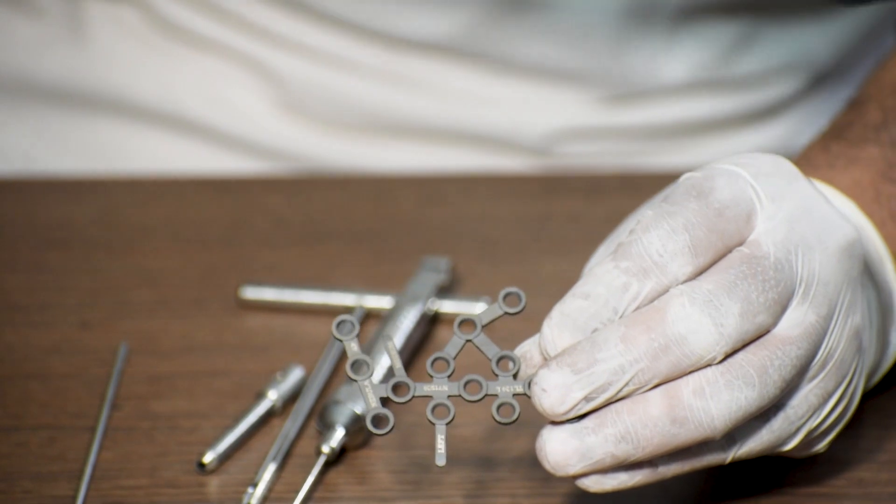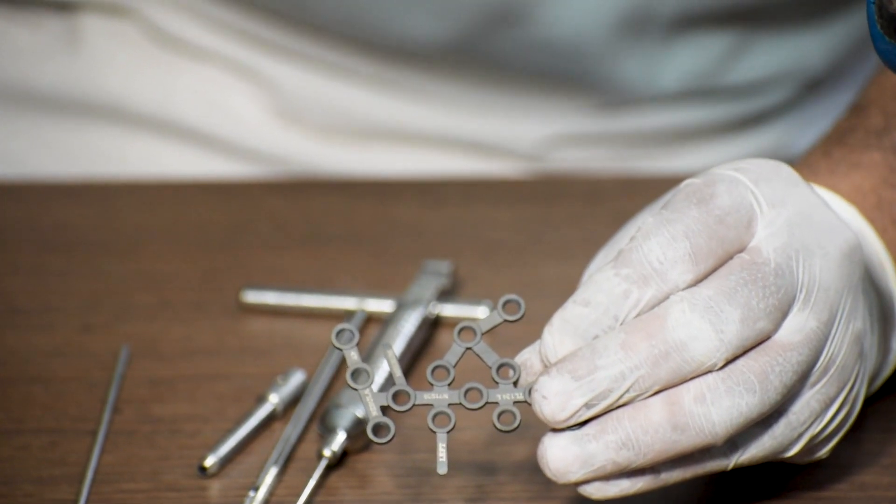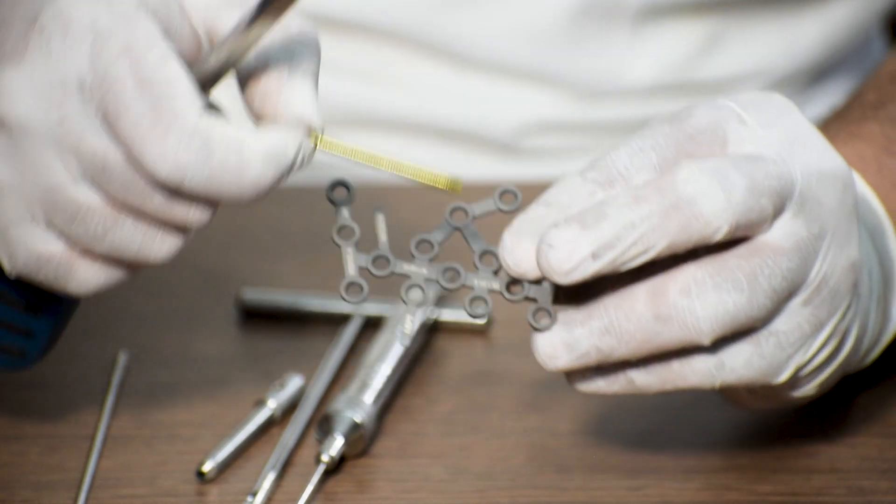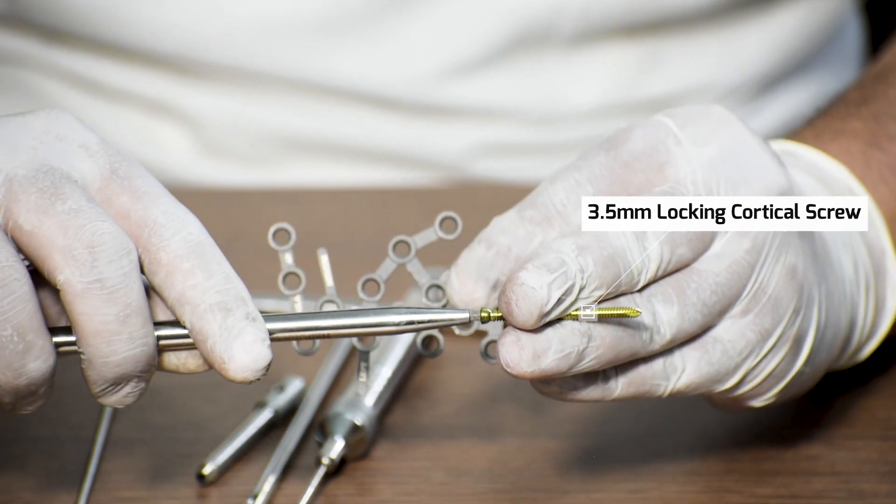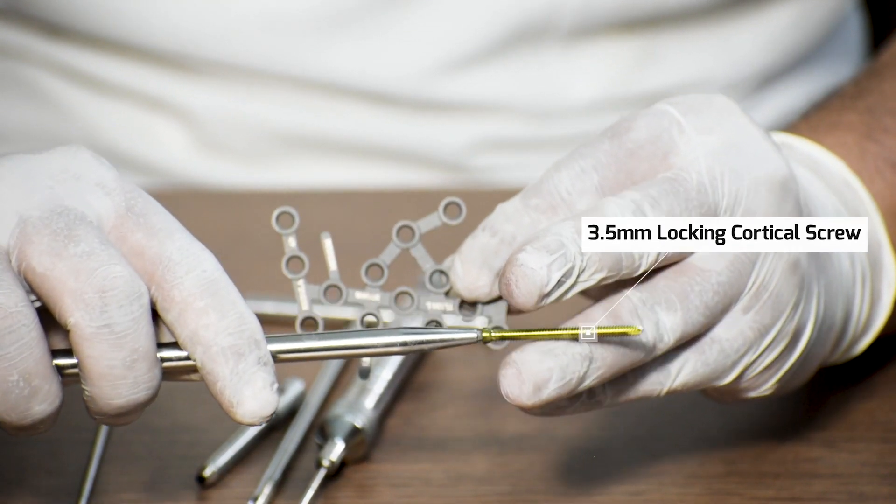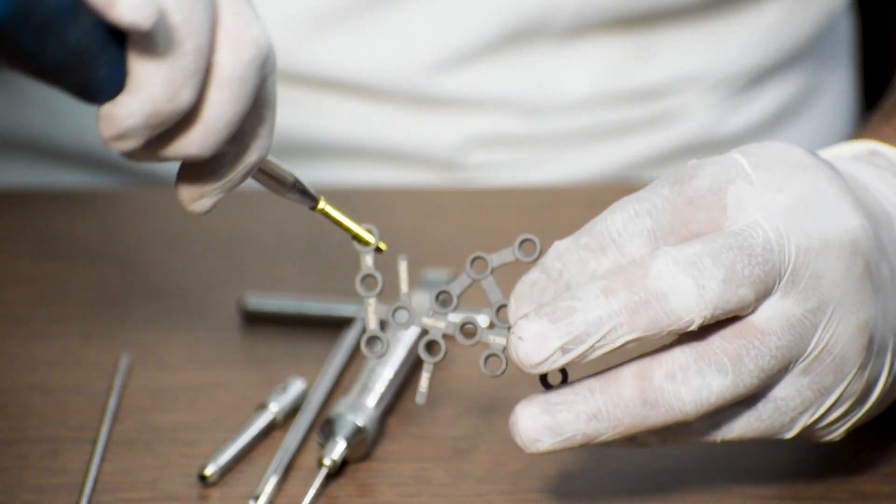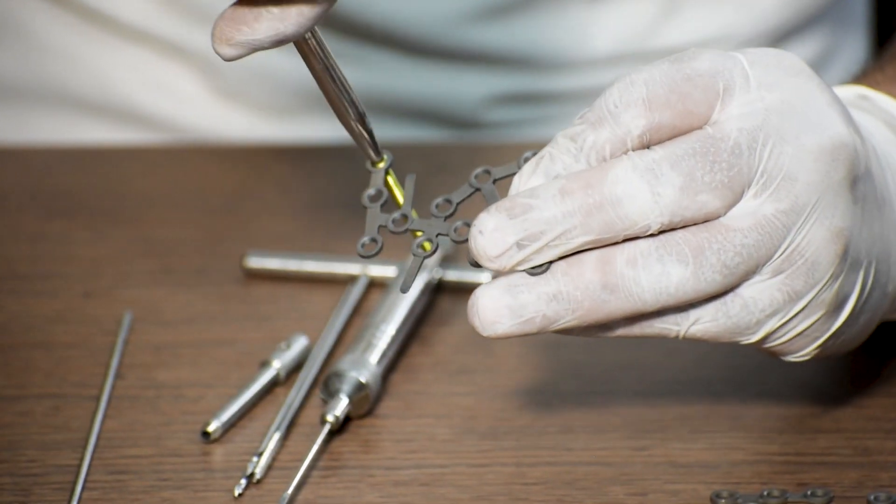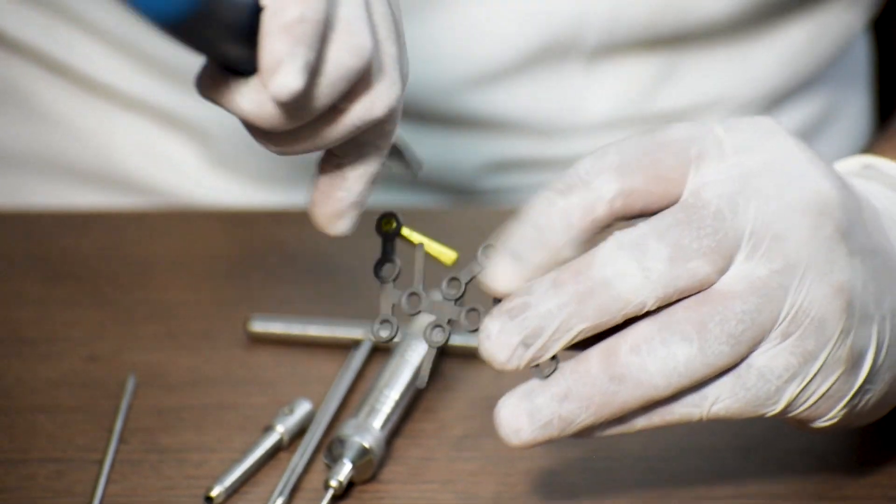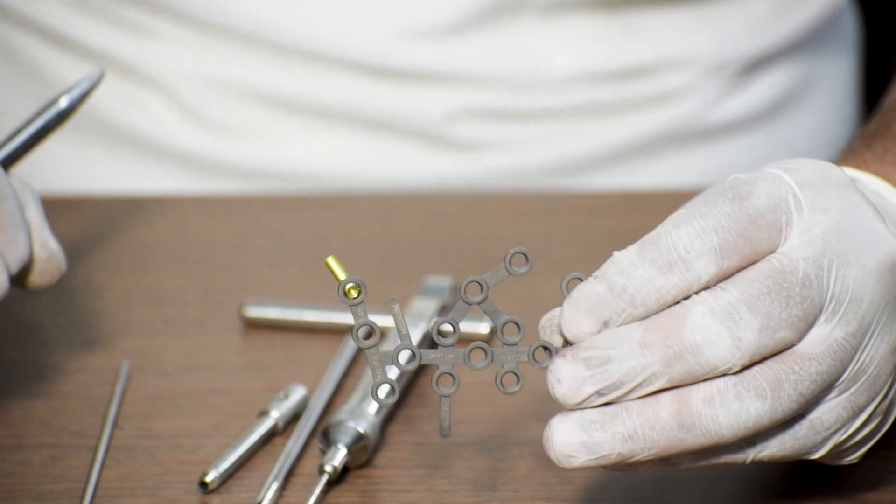After measuring the length of the screw which will be fixed in this plate, we will take a 3.5 mm locking cortical screw and with the help of a 3.5 mm solid screwdriver, we will fix this screw on the desired hole of this plate in the fracture site.